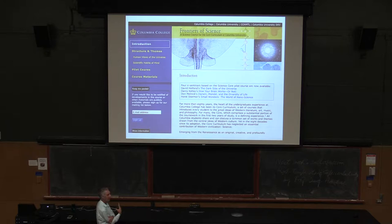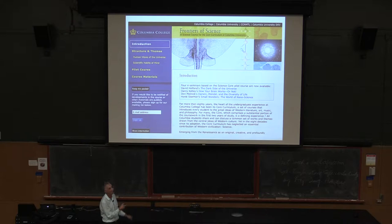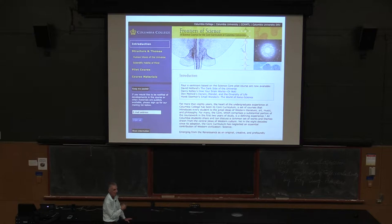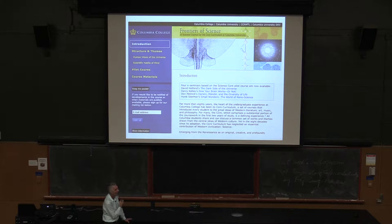I got pulled into this topic because I had to teach a course at Columbia. Columbia has something called the core — every single student has to take these courses. There's one course called Frontiers of Science which every Columbia College student must take to get their degree. The very first physicist to teach in this course was Horst Störmer, who taught quantum mechanics and nanoscience to 550 undergraduates per semester. I was the second person after Horst retired, taking over the physics part.